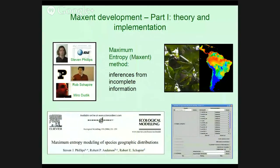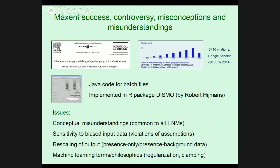Over a decade ago, I began working with some computer scientists on a very interesting project that was published in 2006 — MaxEnt. It was a fascinating time working with people who had never worked with biologists, much less ecologists. We presented the fundamental math of MaxEnt and how it can be applied to ecological modeling of species niches. In addition to MaxEnt's success, there's been a tremendous amount of controversy recently, and much of that has to do with misconceptions and misunderstandings.